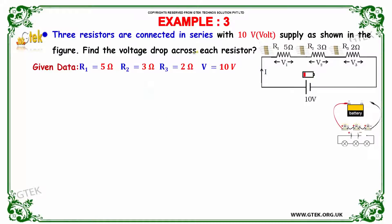So three resistors R1, R2 and R3 are connected in series with the 10 voltage supply. Find the voltage drop across each resistor. That's the question. So R1 is equal to 5 ohm, R2 is equal to 3 ohm, and R3 is equal to 2 ohm.